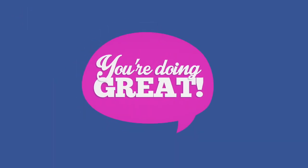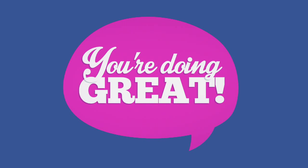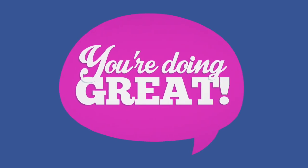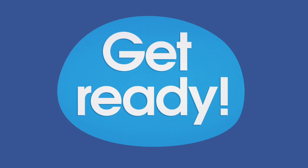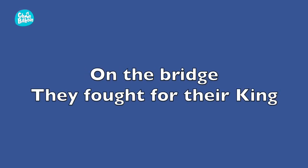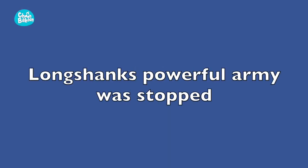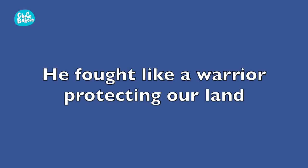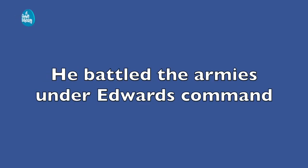You're sounding great, everybody. Let's try full speed verse two, and then we'll go into the chorus again. Are you ready? I'll count you in. Come in after six beats. Here it comes. One, two, three, four, five, six. English knights to Stirling they came, on the bridge they fought for their king. Longshanks' powerful army was stopped, defeated by the Scots.